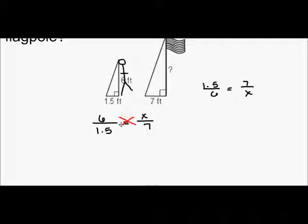So, I'm going to cross-multiply. 6 times 7 is 42. 1.5 times X is 1.5X. Now, we need to divide by 1.5.